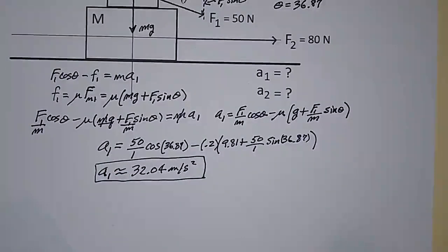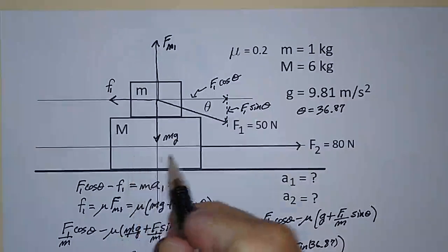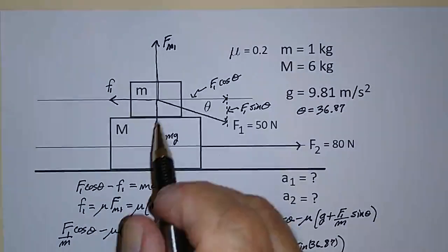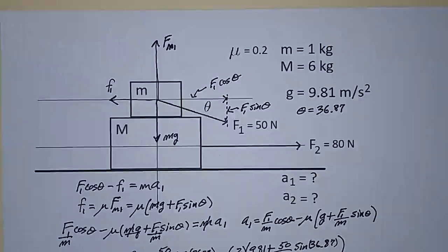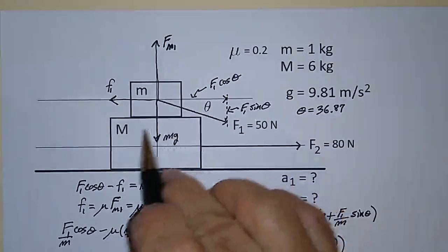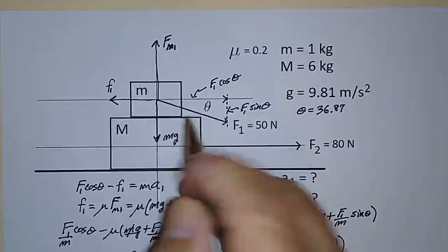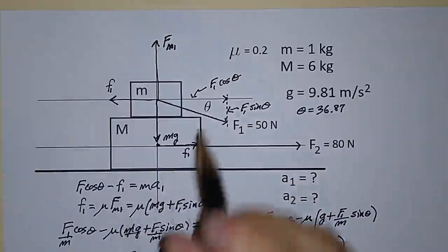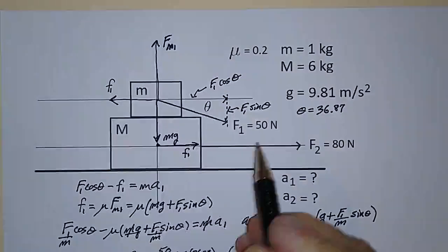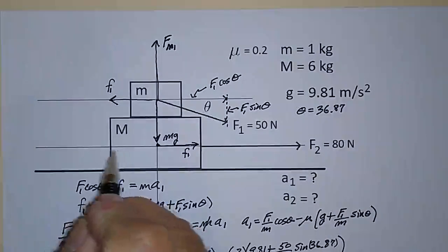Now to figure out a2, the acceleration of big M — this is a little trickier. We need to look at all the forces acting on big M. From the standpoint of this block moving forward with respect to the other, the frictional force f1 points back, but from the standpoint of big M, f1 points forward. So little f1 is also pushing big M in the forward direction. Then there's another friction force little f2 acting backward.